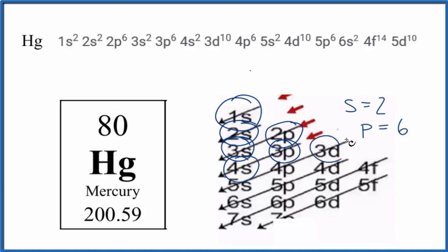4s2, then we go to the 3d, so we go 4s, 3d, d can hold up to 10. 3d10, 4p6, 5s2. From the 5s2, we go to the 4d, right here, 10. 5p6, 6s2.